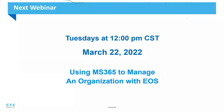The topic for next month is using Microsoft 365 to manage your organization using EOS — the Entrepreneurial Operating System. The book Traction talked about EOS and a lot of people know it as Traction. EOS started in Minnesota. Even if you don't use EOS, it'll be a helpful session to talk about how to communicate company objectives and goals down to individual department tasks using SharePoint and other tools to run your business more effectively.